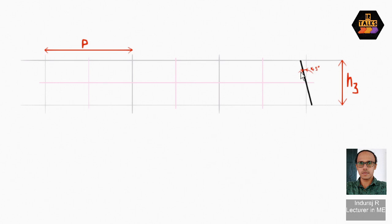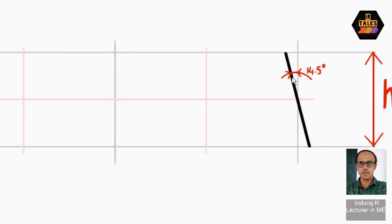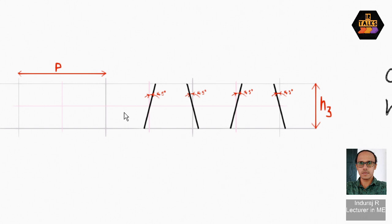Similarly, at each junction point, we will draw 14.5-degree lines in a clockwise direction. We will repeat this pattern to complete three thread forms. We complete the thread flanks on both sides. This is 14.5 degrees on each side, making the total angle 29 degrees. Now we will cover the top and bottom portions.